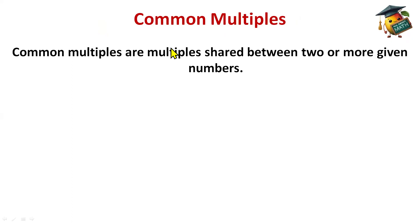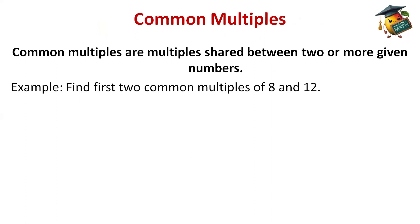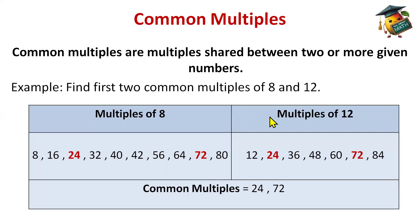Now, common multiples — just like common factors. Common multiples are the multiples shared between two or more given numbers. Example: write the first 2 common multiples of 8 and 12. We write the table of 8 and the table of 12, continuing until we find 2 common multiples. The first common multiple is 24 and the second is 72. So the common multiples of 8 and 12 are 24 and 72.